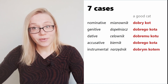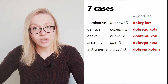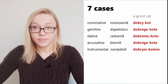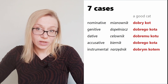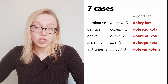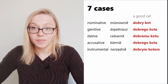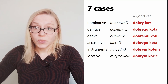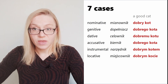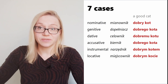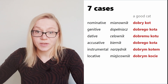Another case is the instrumental case, in Polish 'narzędnik'. The good cat in the instrumental case would be 'dobrym kotem'. Then we have the locative case, 'miejscownik', and the good cat in the locative case would be 'dobrym kocie'.